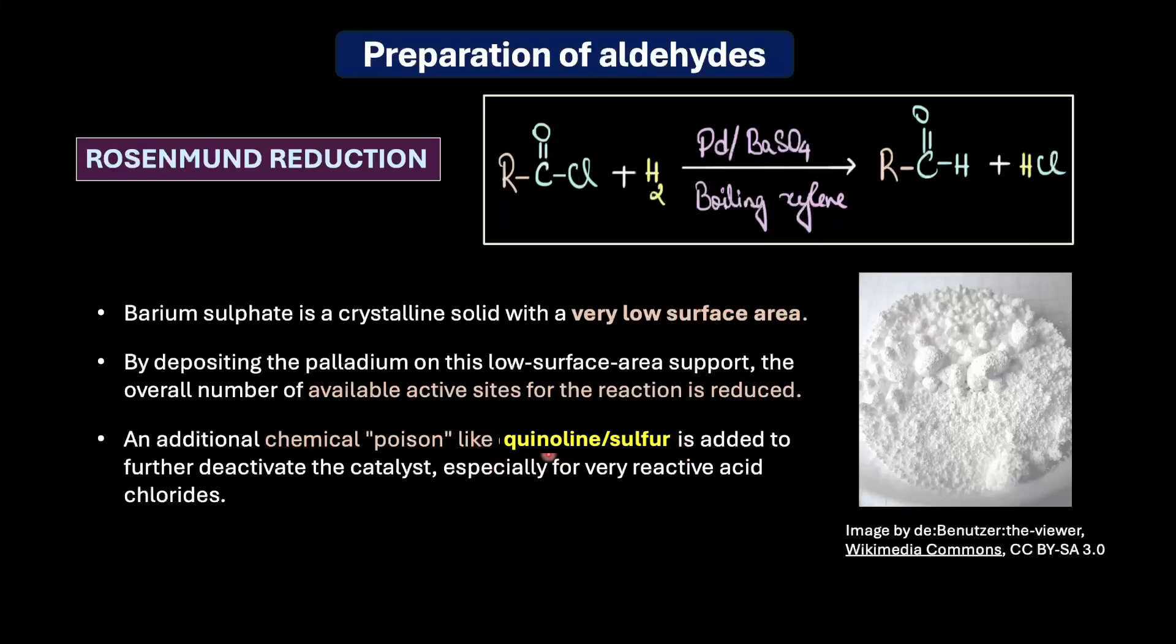Quinoline or sulfur actively binds to the most reactive sites on the palladium surface and further deactivates our catalyst. The key to the success of this Rosenmund reaction is the deactivated catalyst which stops the reaction efficiently at the aldehyde stage. If the catalyst were not poisoned or we did not moderate the reactivity of our catalyst, then the reduction would continue all the way to a primary alcohol, which is not what we want.